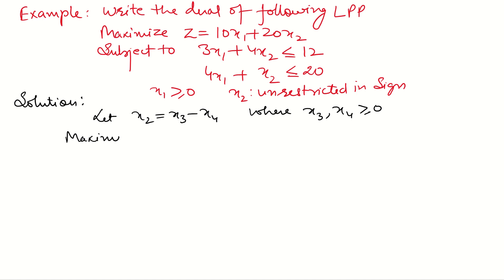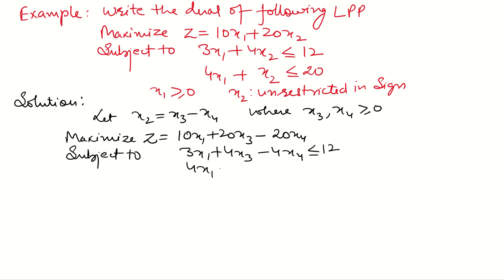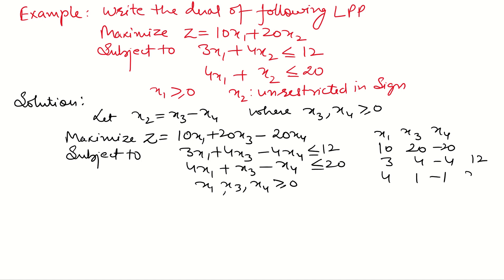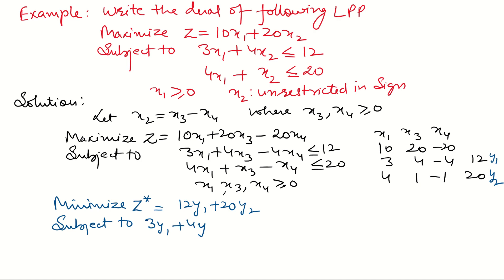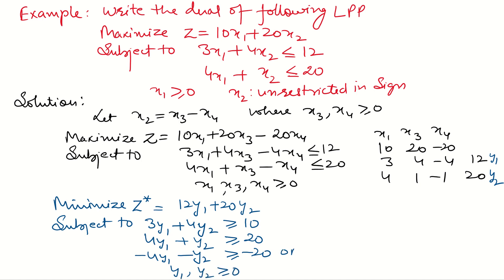If x3 > x4 then x2 is positive; if x3 < x4 then x2 is negative. So, Maximize z = 10x1 + 20x3 − 20x4, subject to 3x1 + 4x3 − 4x4 ≤ 12, 4x1 + x3 − x4 ≤ 20, and x1, x3, x4 all positive. To write the dual, copy all coefficients, take variables y1 and y2, and read column wise. Minimize z* = 12y1 + 20y2, subject to 3y1 + 4y2 ≥ 10, 4y1 + y2 ≥ 20, and −4y1 − y2 ≥ −20. From the second and third constraints we get 4y1 + y2 = 20, where y1 and y2 are both positive.